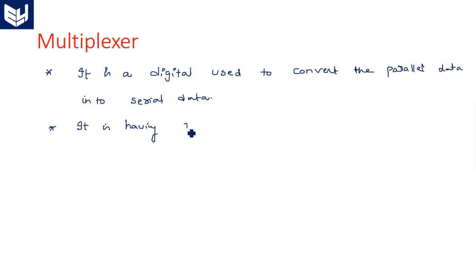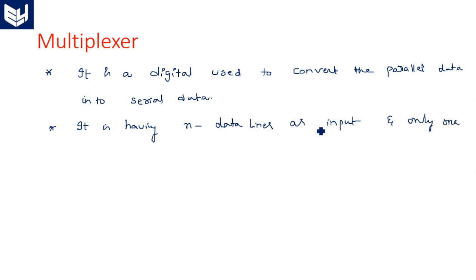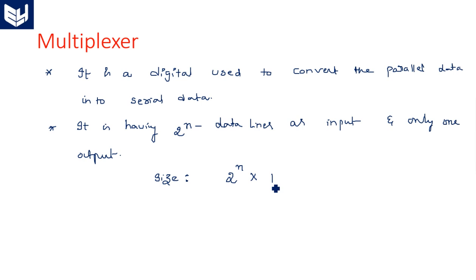A multiplexer has n data lines as input — more precisely, 2 power n data lines as input — and only one output. So the size of a multiplexer is defined as 2 power n by 1: for 2 power n number of inputs, it will have only one output.